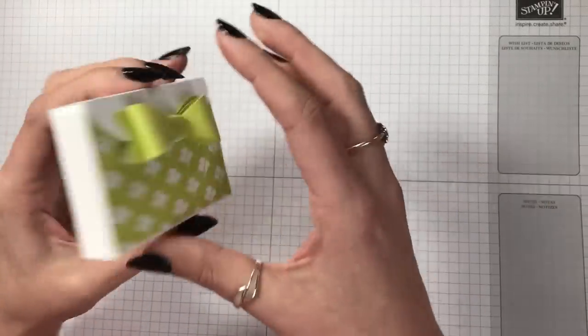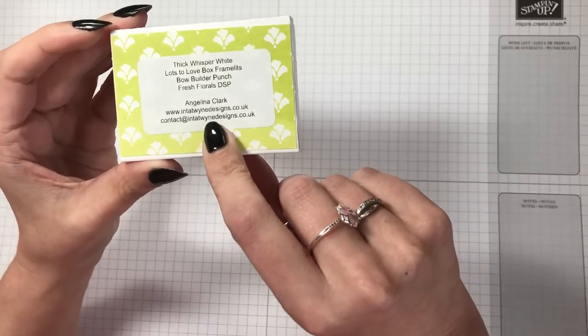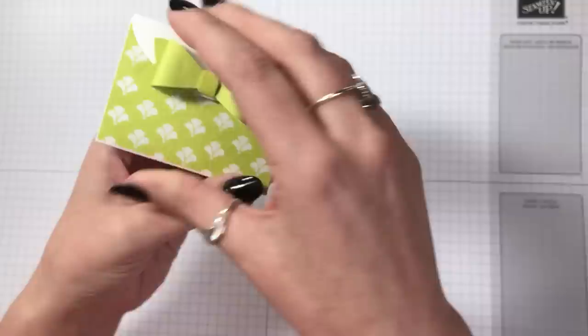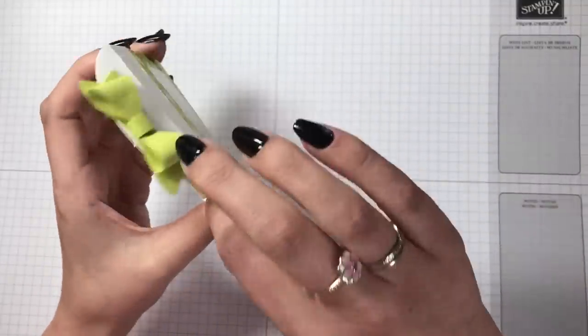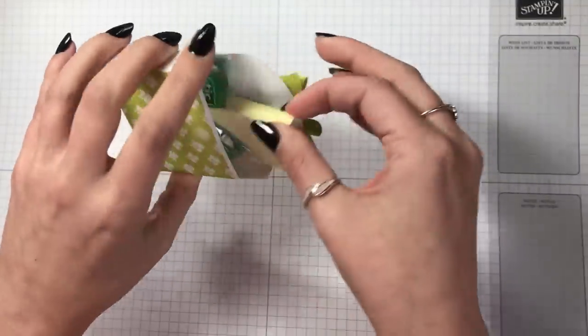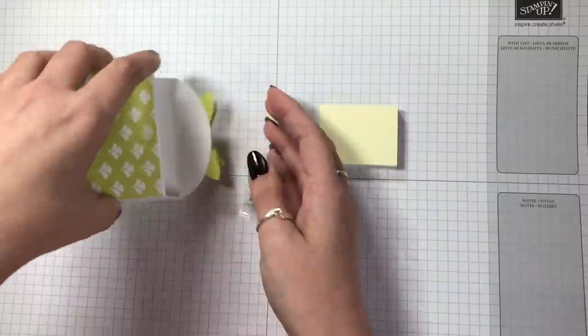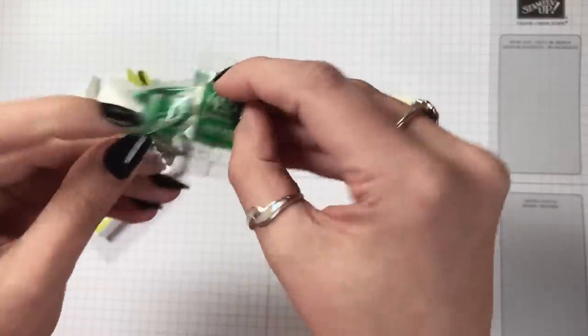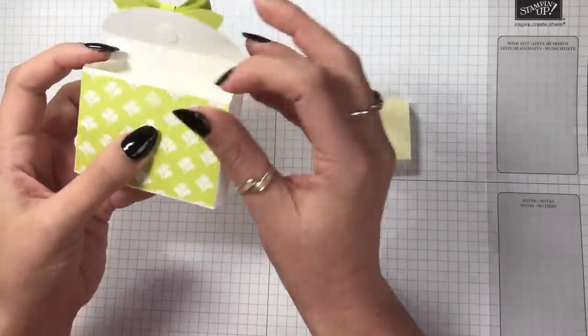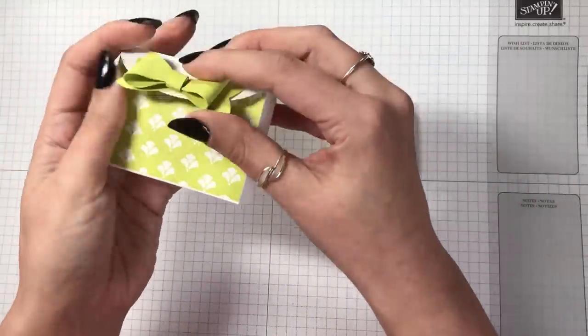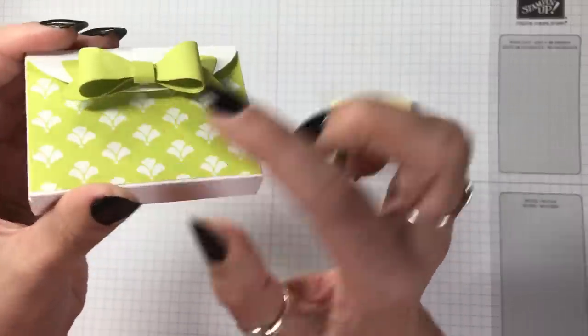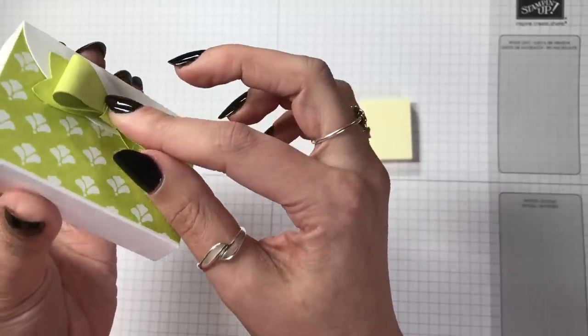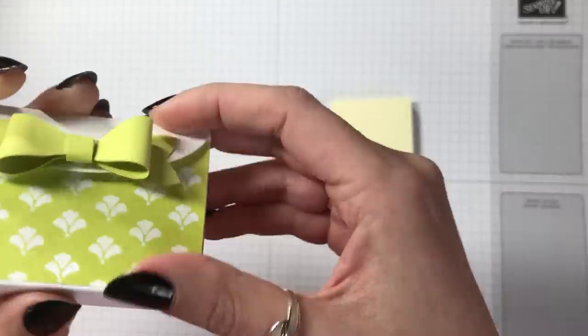This one was cute, made by Angelina from Intertwined Designs. She put in a little post-it note pad which is always handy and these cute little mini tic tacs. What I love the most about her box is it's quite a sturdy box and I loved the bow. It's just held together by a mini dimensional there.